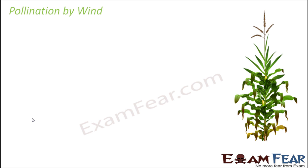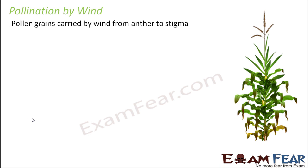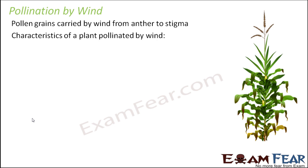Let us first talk about the abiotic agents. We will discuss two agents: wind and water. Wind pollination is more common compared to water pollination. In wind pollination, pollen grains are carried by wind from anther to stigma of the same or different plant. It is a matter of chance because pollen grains carried by wind may or may not reach the right stigma.